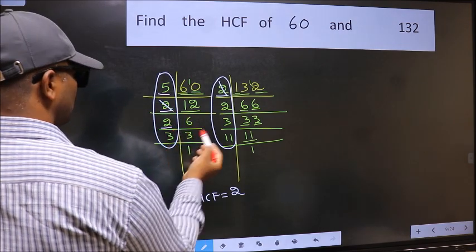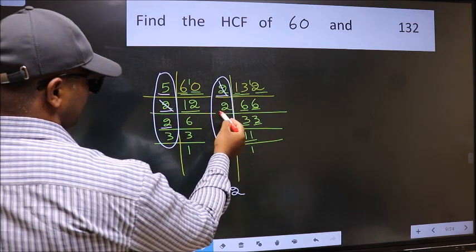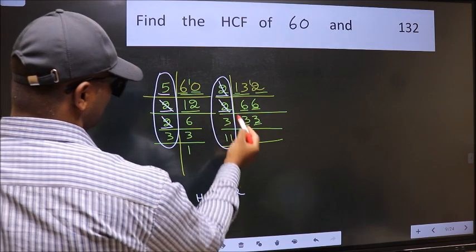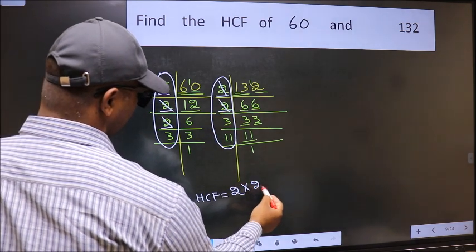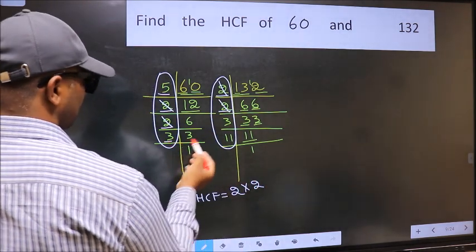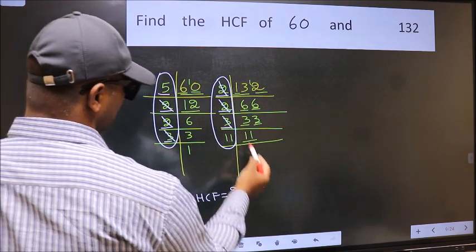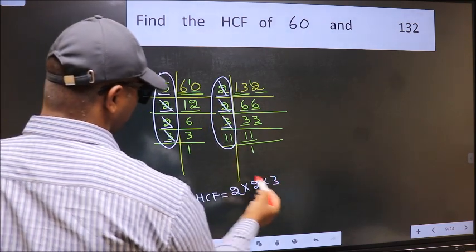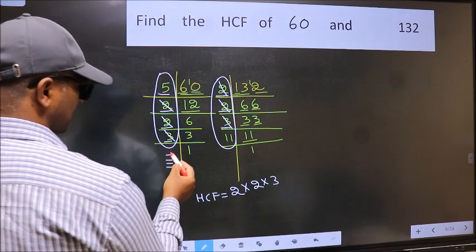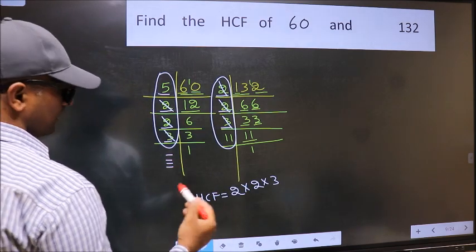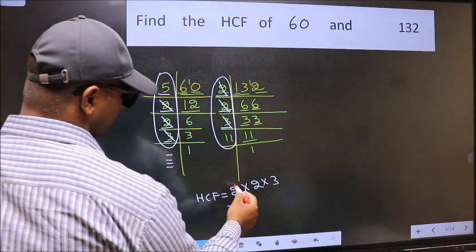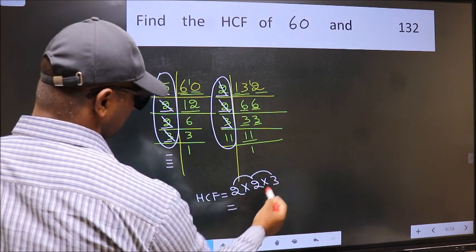Next number 3. Do we have 3 here? Yes. So cut 3 right here. No more numbers have been left out. So our HCF is 2 into 2, 4 into 3, 12.